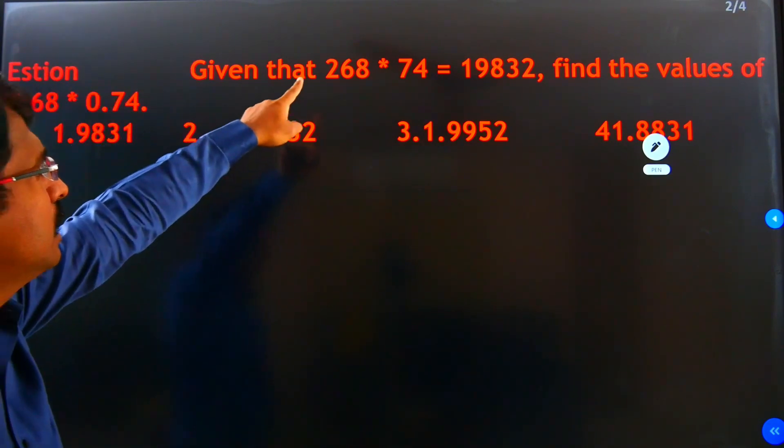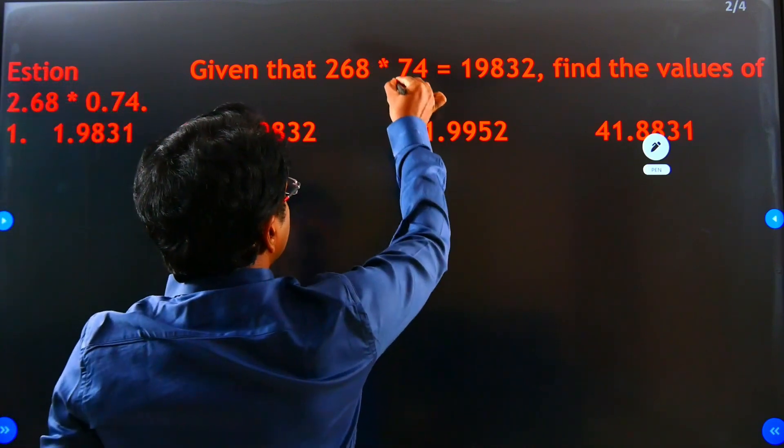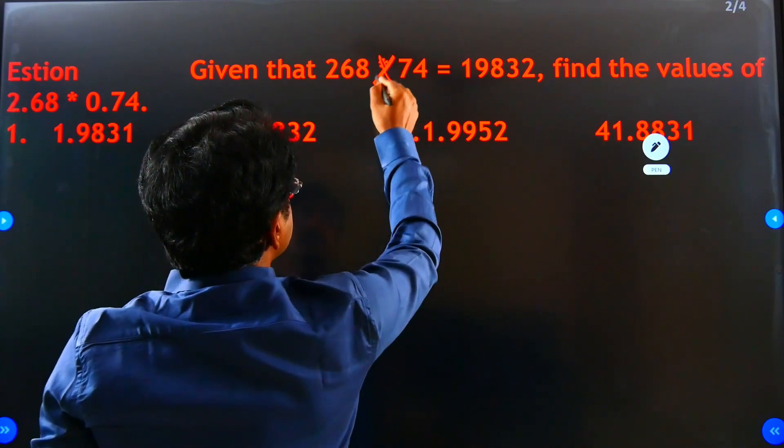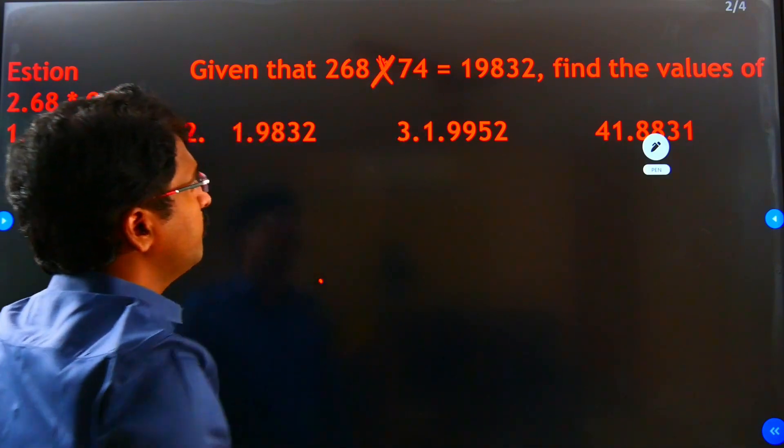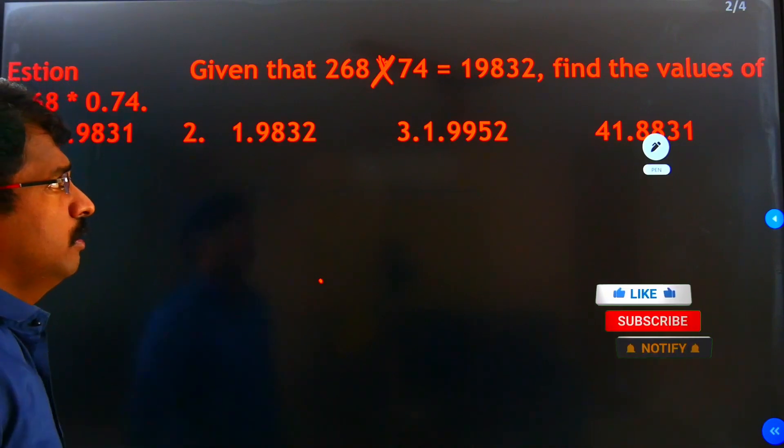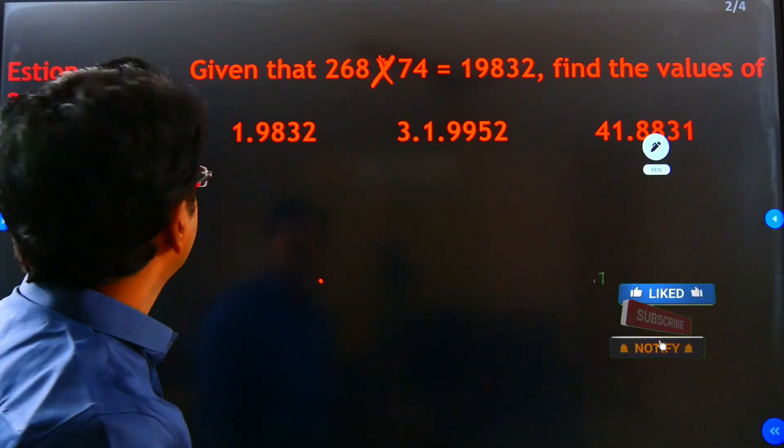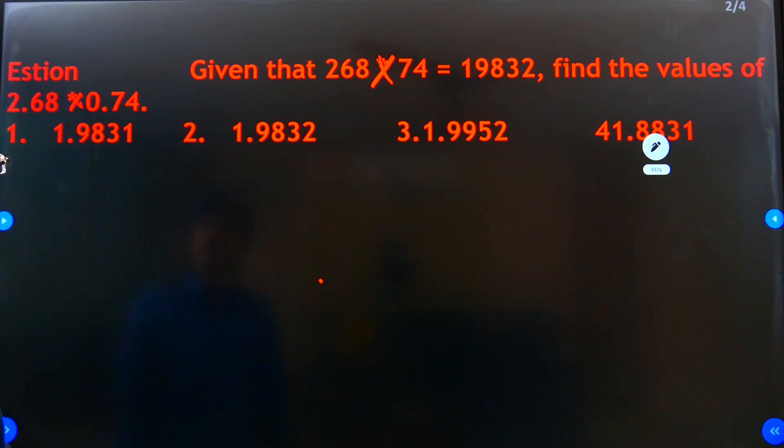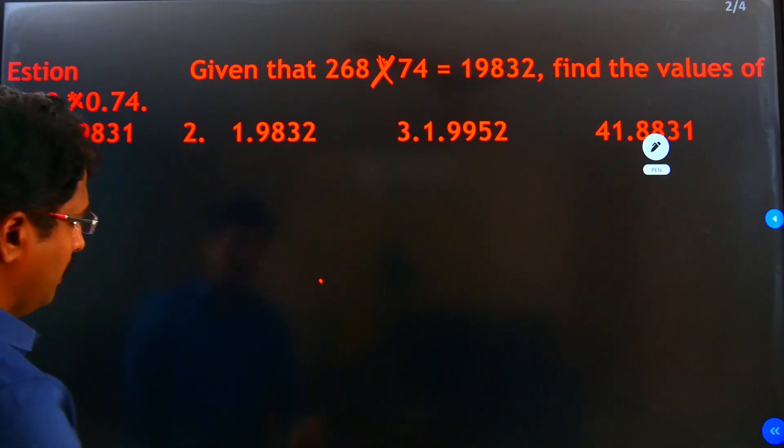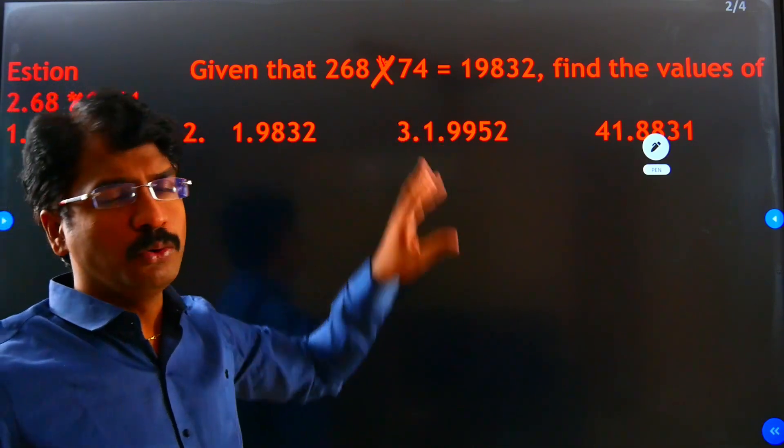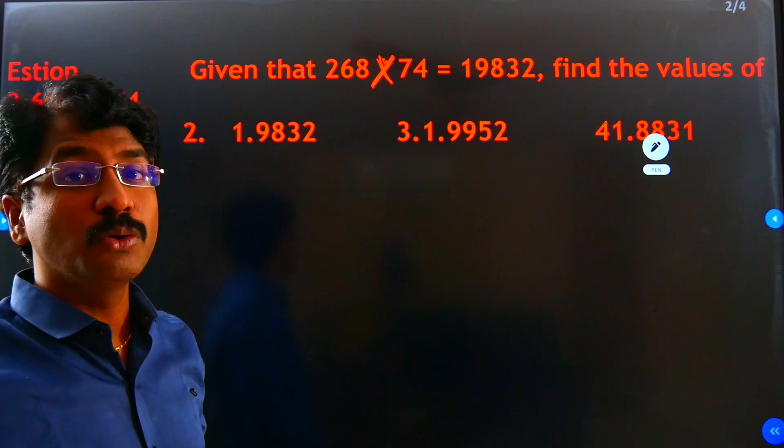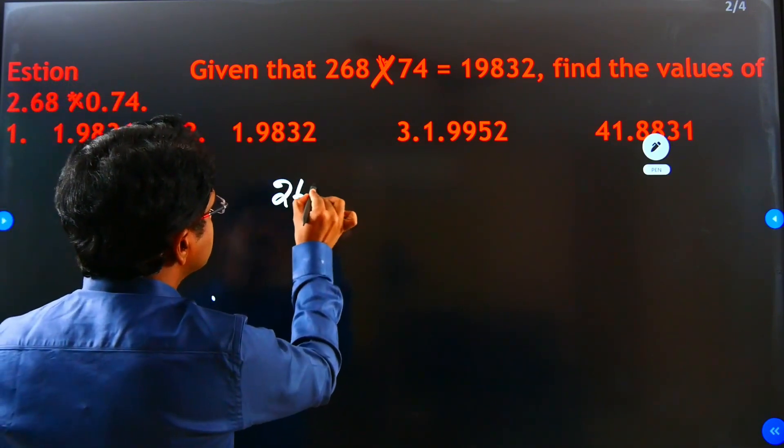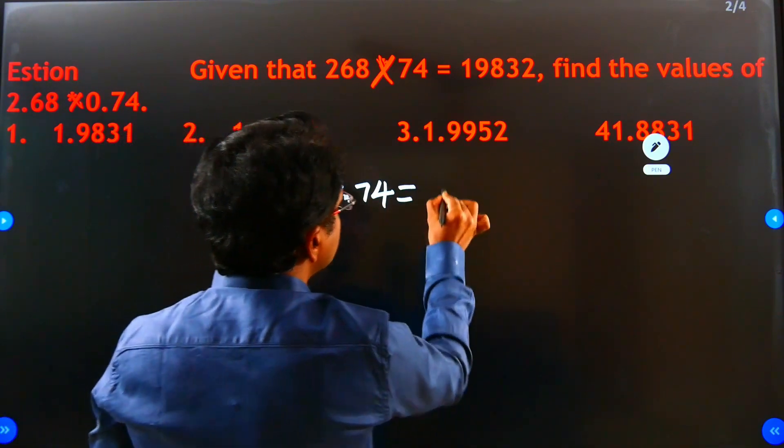Given that 268 into 74 equals 19,832, find the value of 2.68 into 0.74. So here they gave some clue, that means here no need multiplication. One second, we will write here what they gave: 268 into 74 equals 19,832.